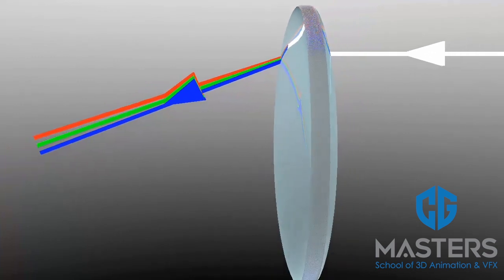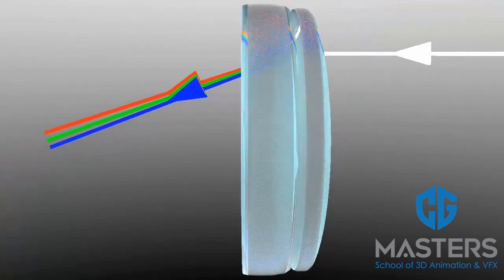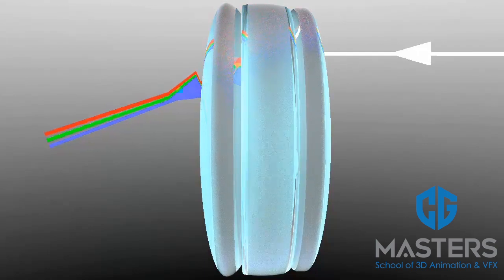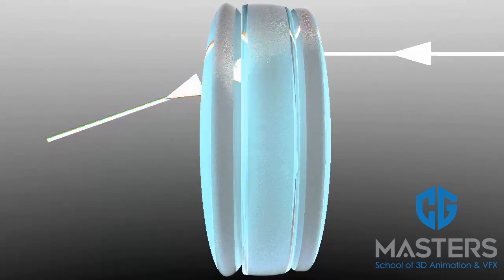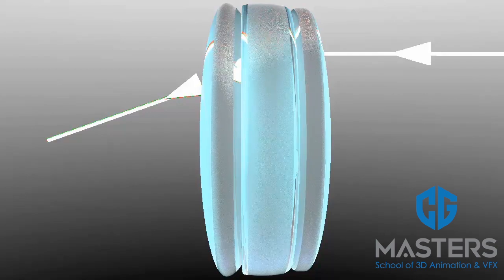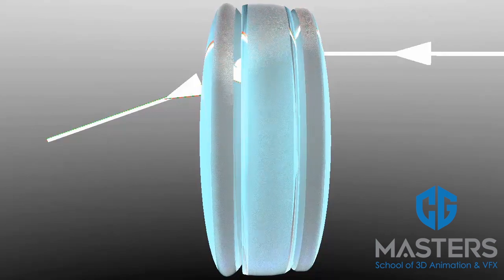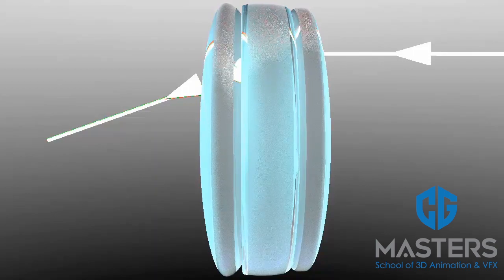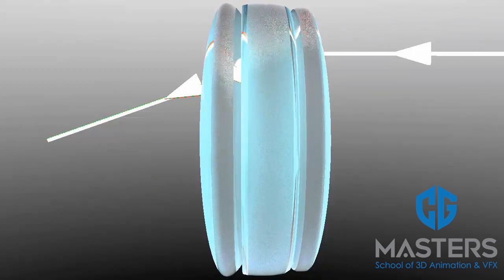Manufacturers attempt to correct for chromatic aberration by assembling compound lenses made of different types of glass to attempt to align the refraction of the different wavelengths. This will reduce the amount of aberration over a certain range of wavelengths, but it does not produce perfect correction. Chromatic aberration is most common in wider and lower quality lenses.